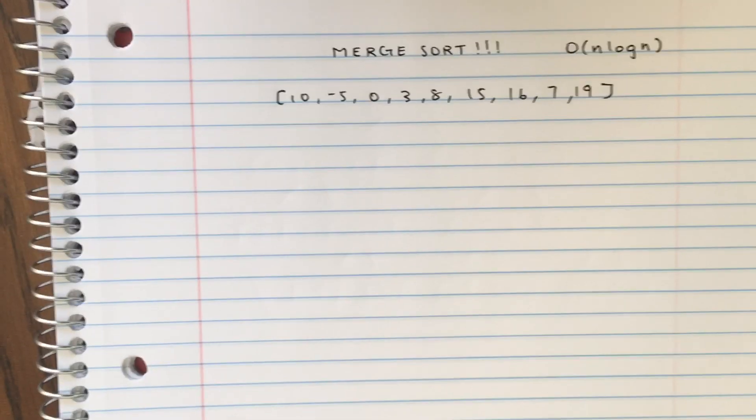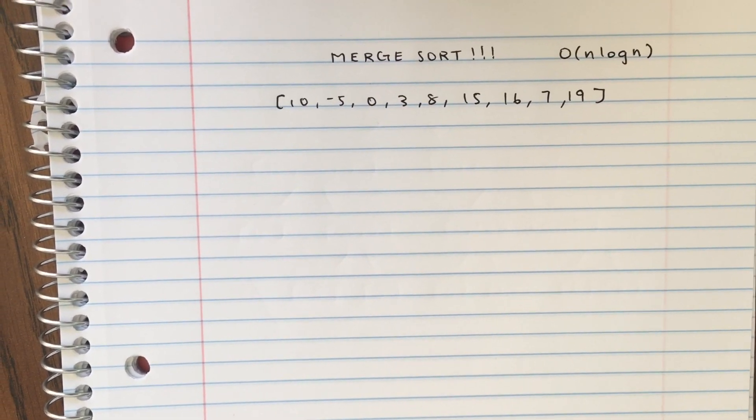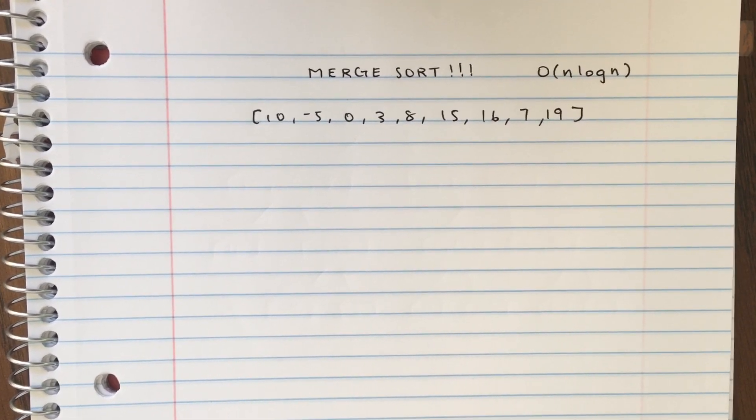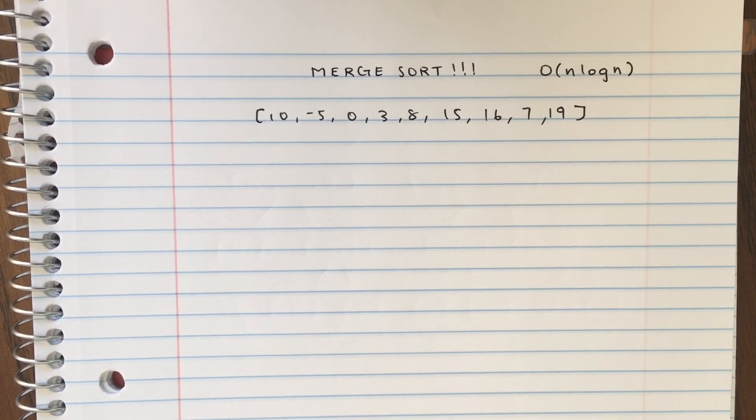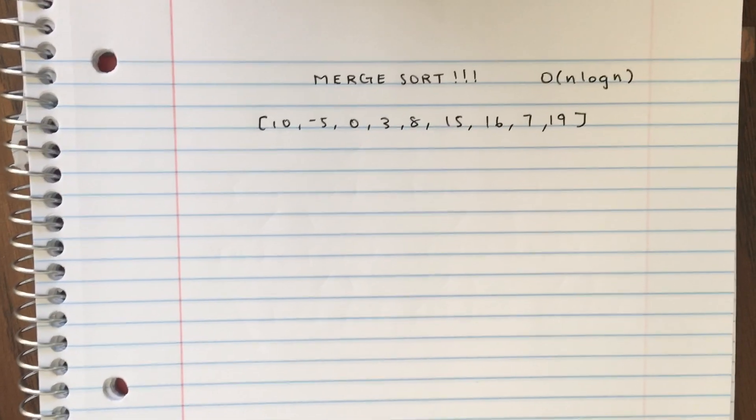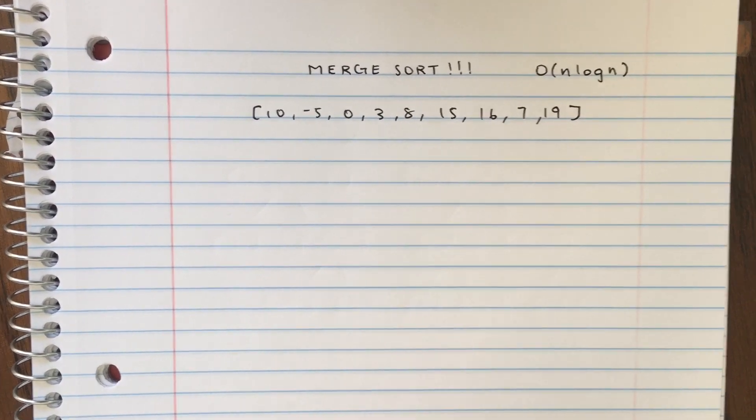Merge sort is a divide-and-conquer algorithm. It divides the list into two halves and then using recursion, it calls itself for the two halves until you hit a single element list, and then you go back up and you merge and sort on the way.